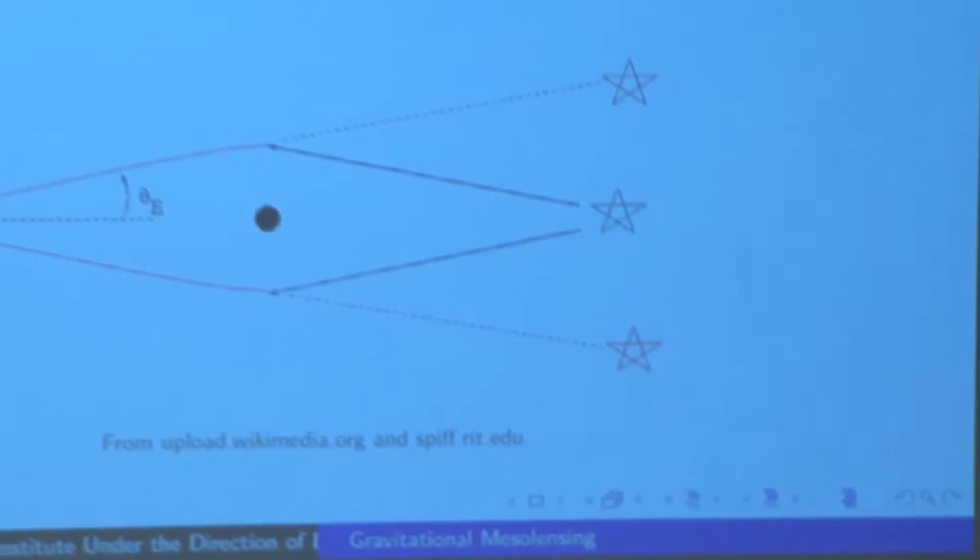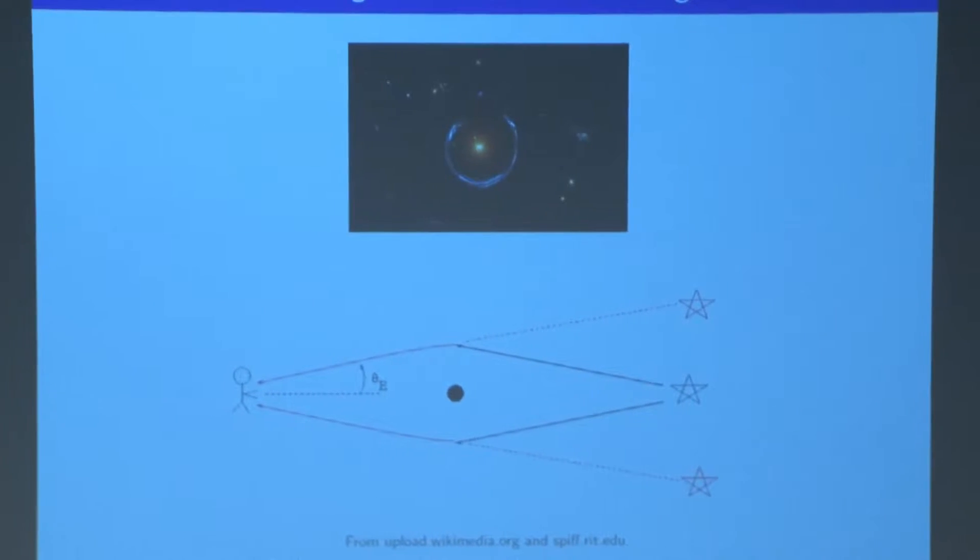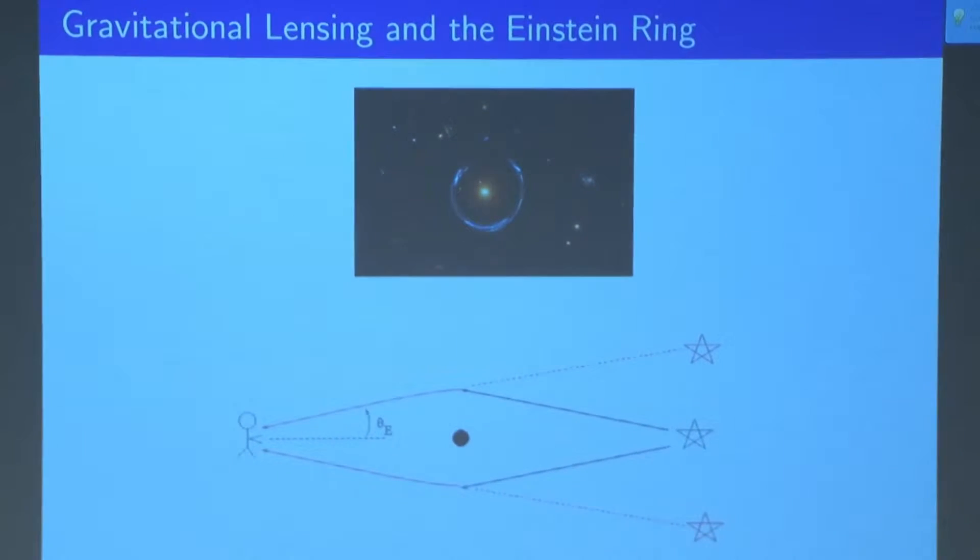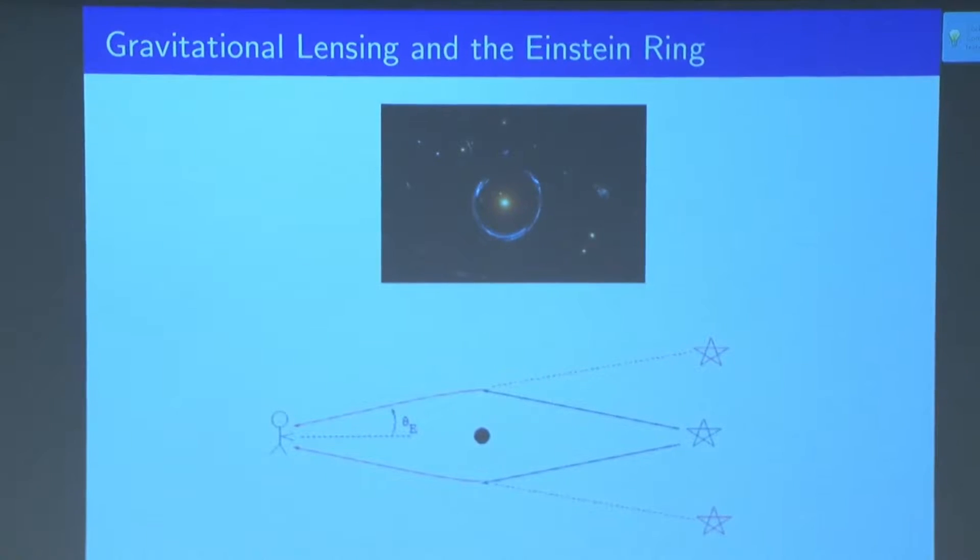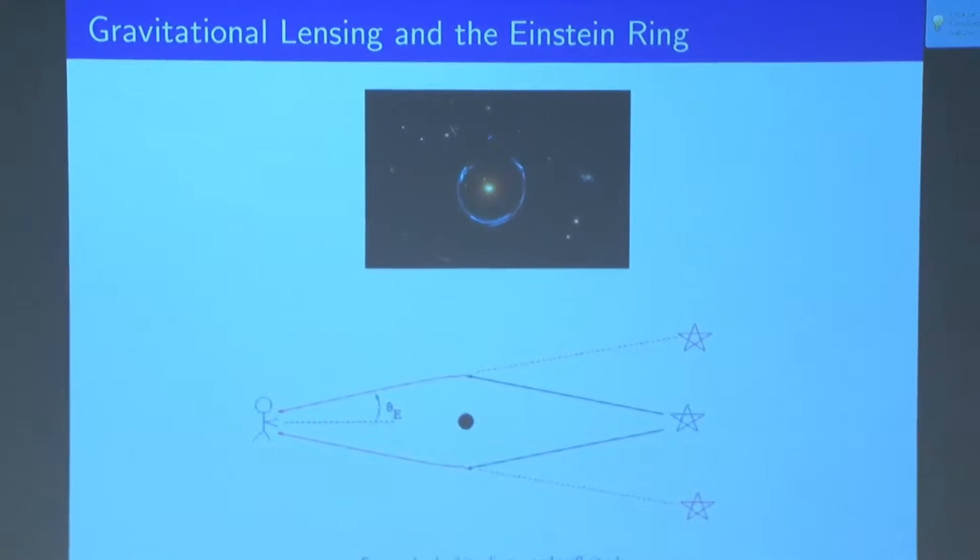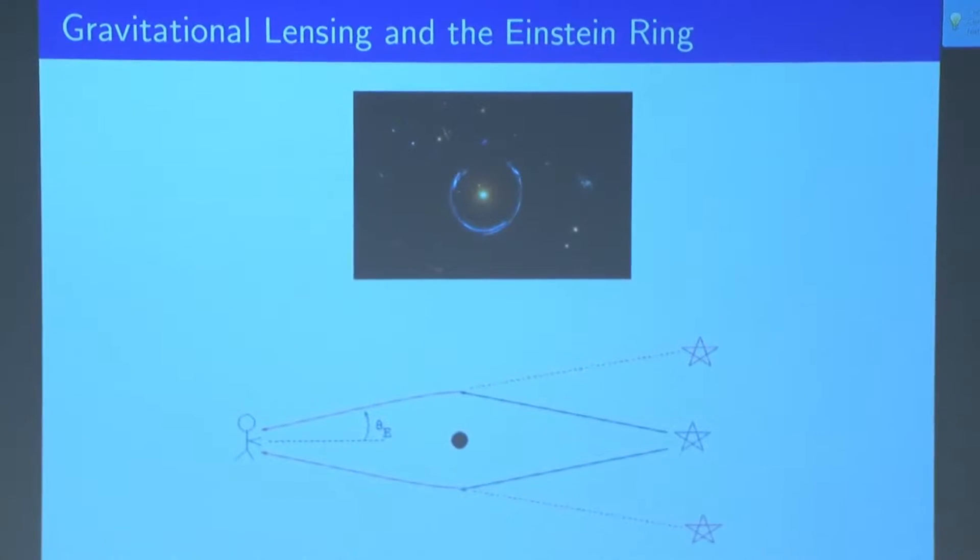And one of the tools we have to do this is called gravitational lensing. Gravitational lensing is basically when you have light coming from a background source that is bent around a massive object in the same line of sight. And that massive object is called a lens because it basically acts as an optical lens. It bends the light so that the observer sees a distorted image of the original.